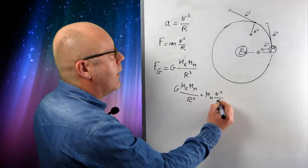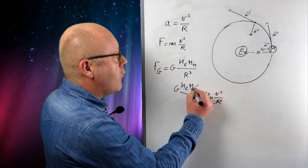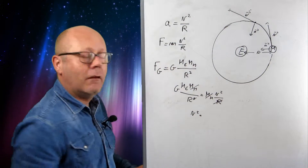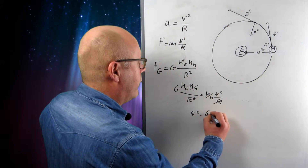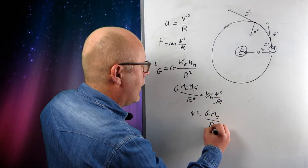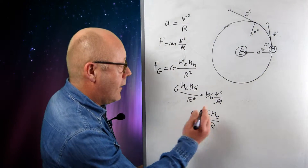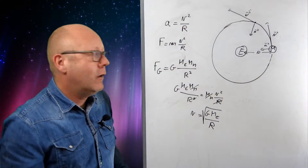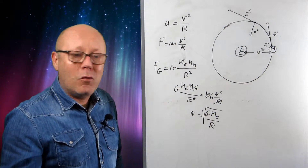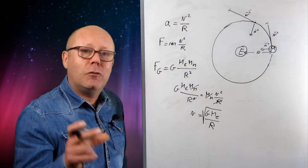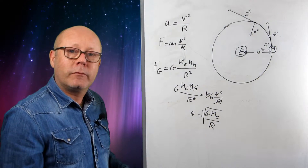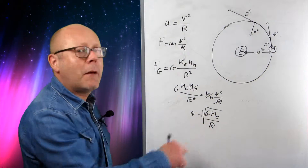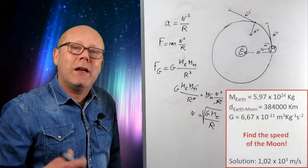So I can do some simplifications now. I can remove one of the R's and I can remove the mass of the Moon. And I get this expression for the speed of the object in motion, so the Moon. If I remove the square, I can square root it. And now, if I had a question asking me for the speed of the Moon and giving me the mass of the Earth and the distance between the Moon and the Earth, I could answer the question.